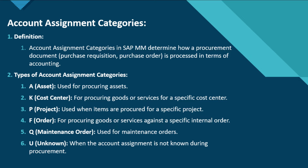We have some codes: A is for asset, which is used for procuring assets; K is for cost center, for procuring goods or services for a specific cost center. These are account assignment values which we have to put in the line item of the PR or the PO document.